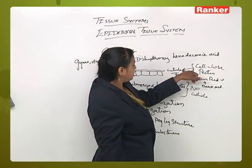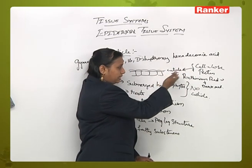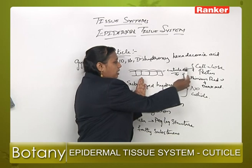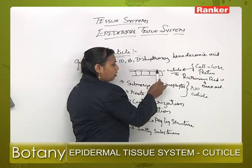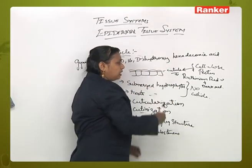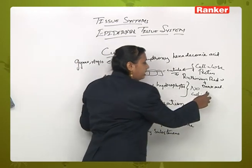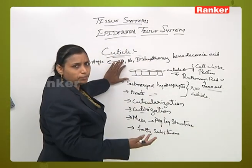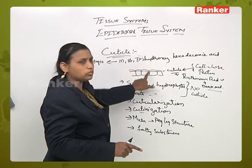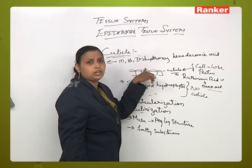The cuticle layer or cutin is present very closely associated with the cellulose and pectin layer. Since we cannot easily differentiate between cuticle and epidermis, we treat the area with ruthenium red. The area having the cuticle layer will turn dark red. Under the microscope after ruthenium red treatment, we can identify the dark red layer covering the epidermal cells, indicating they are protected by cuticle.